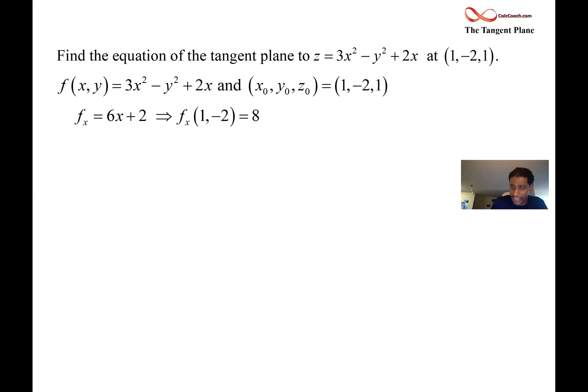When you plug in your point, x naught, y naught into that, what you get out is a number. And if x is 1, you'll get an 8 out because there are no y's there.